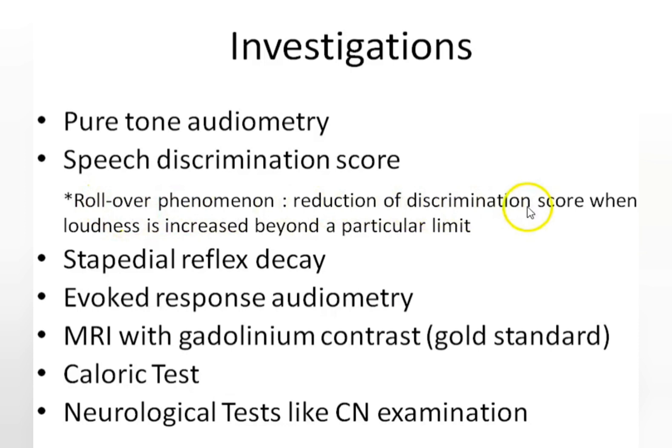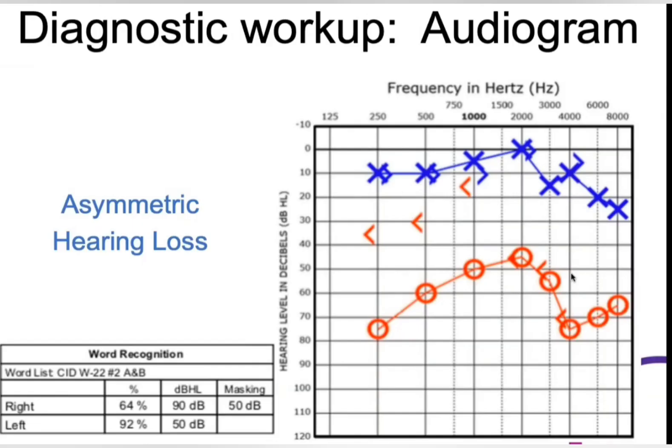Investigation essentially comprises audiometric testing, MRI, and neurological examination. There is something called the rollover phenomenon — a reduction in the speech discrimination score when loudness is increased beyond a particular limit. The audiological workup includes an audiogram where you see asymmetric hearing loss.